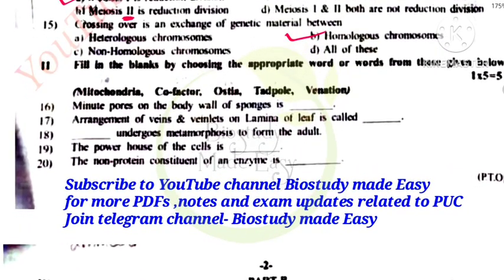Fill in the blanks: Minute pores on the body wall of sponges are called ostia. Arrangement of veins and veinlets on the lamina of a leaf is called venation. The organism that undergoes metamorphosis to form the adult is the tadpole. The powerhouse of the cell is the mitochondria. The non-protein constituent of an enzyme is called a cofactor. These are all one-mark questions.